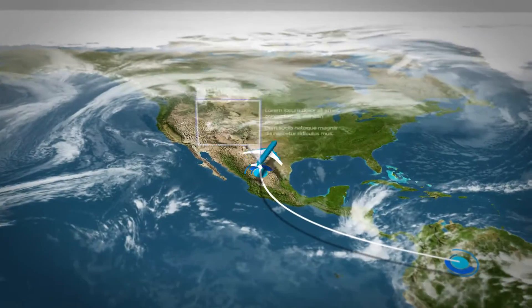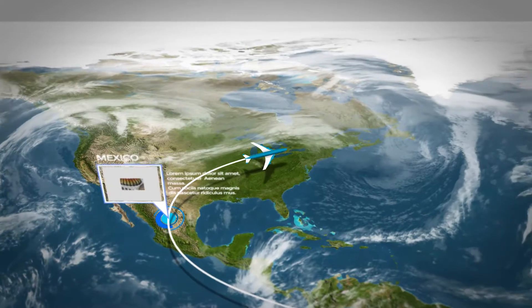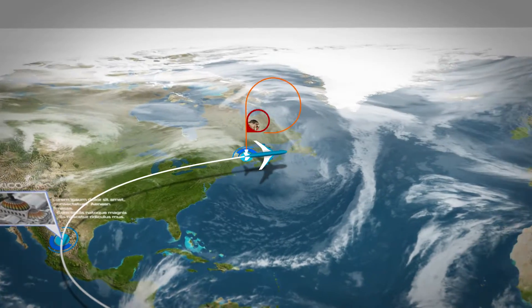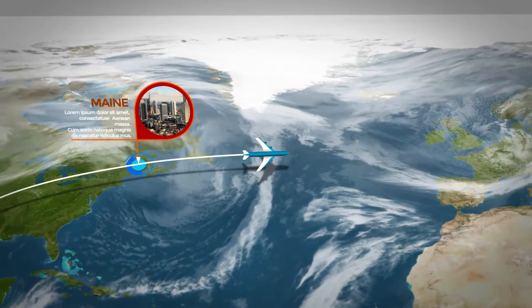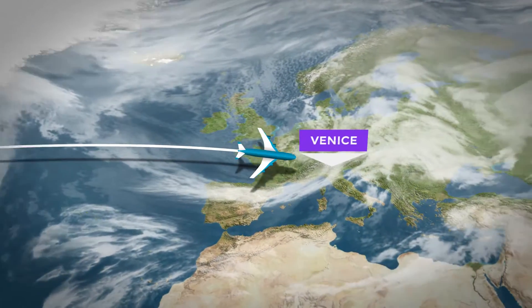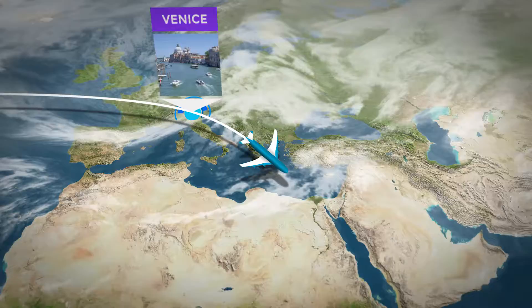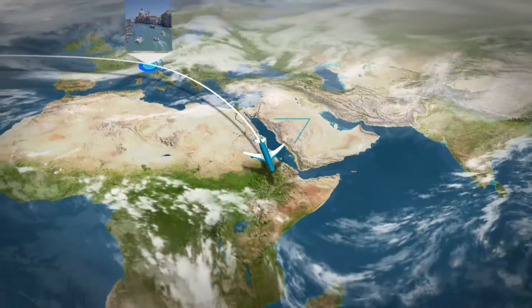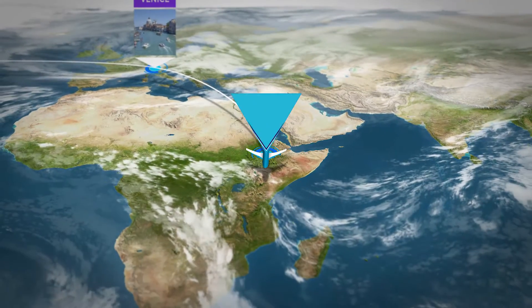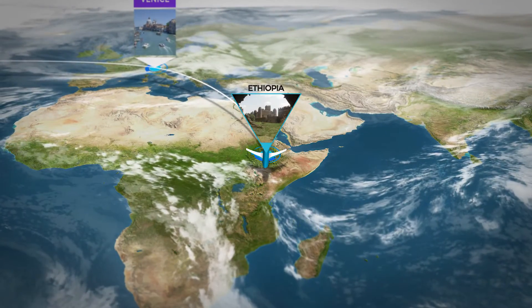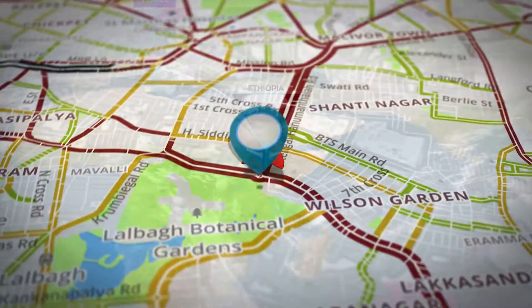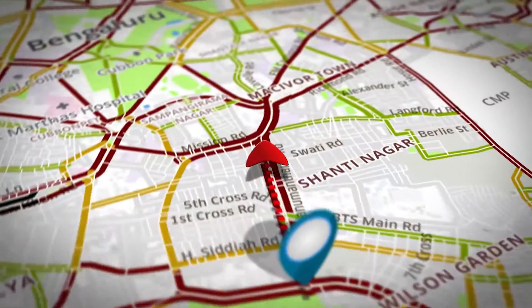Map Route Generator also lets you insert photos or videos in 20 different topologies of callouts, with or without texts. And you have a choice of 10 pin styles to locate your stops.